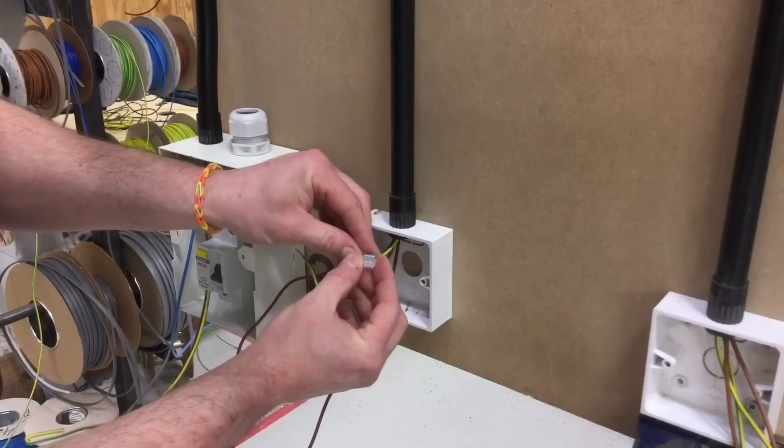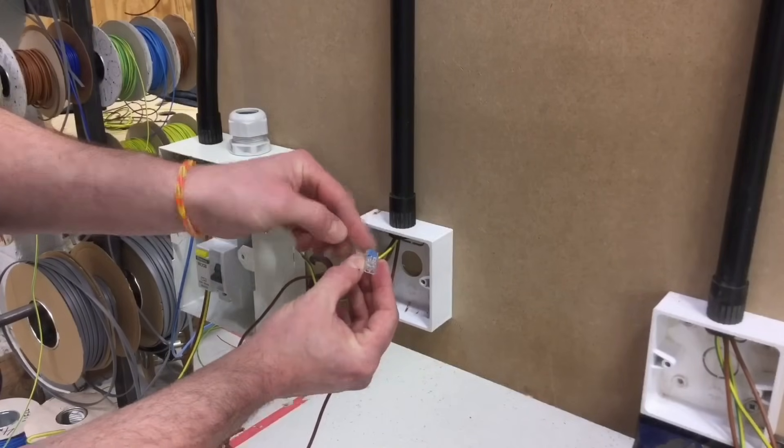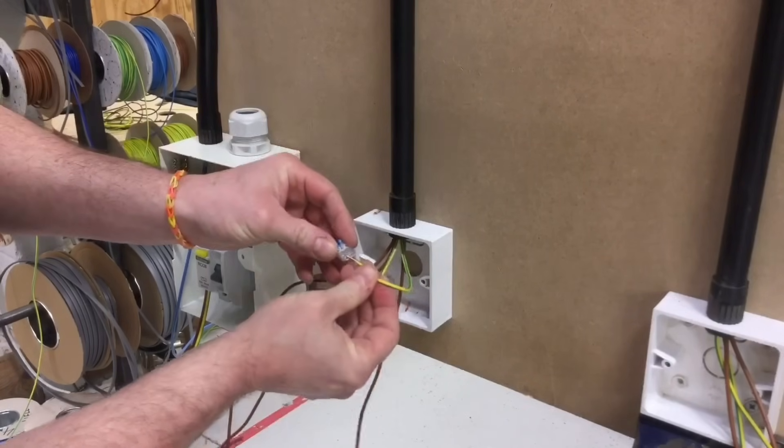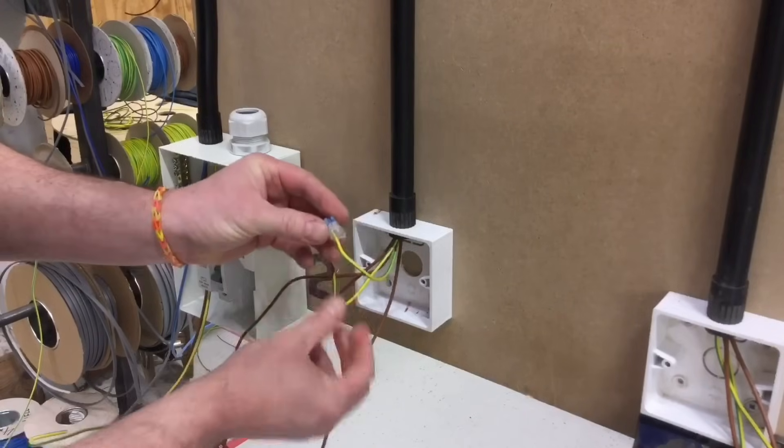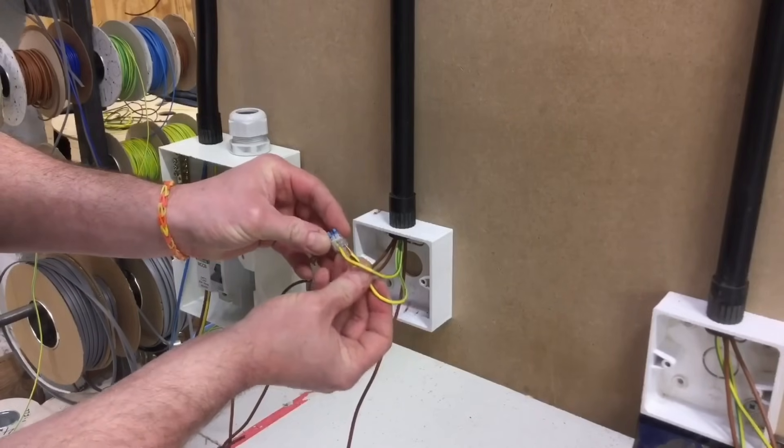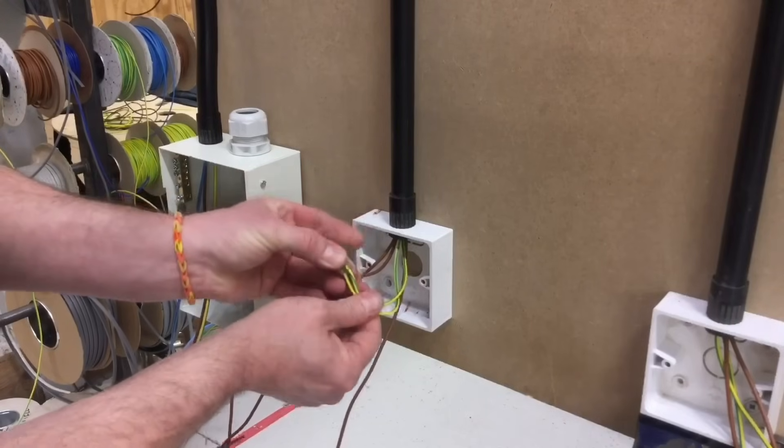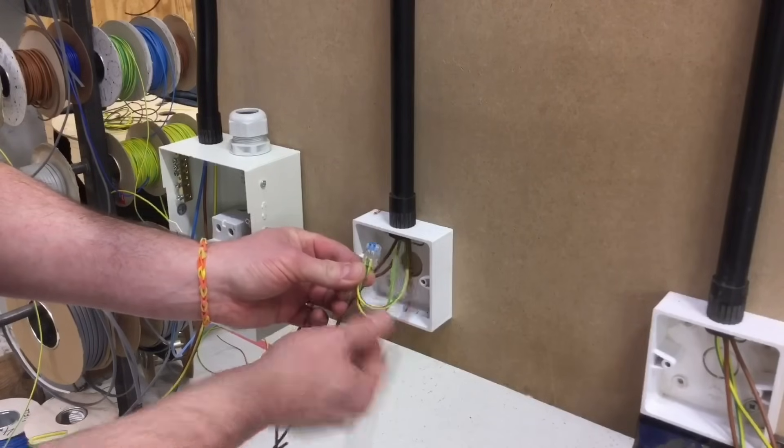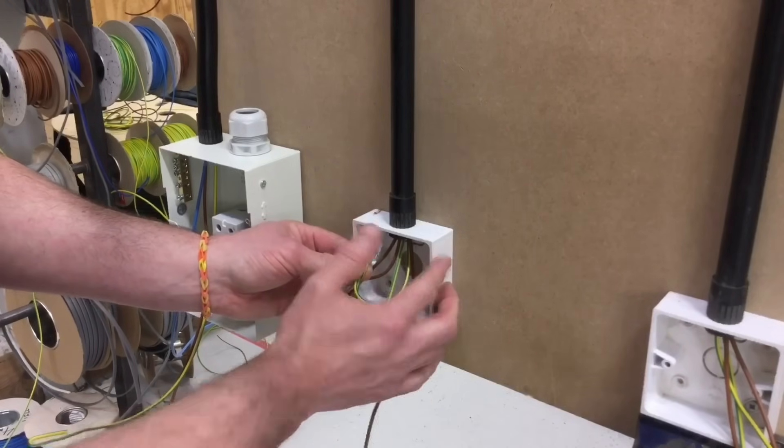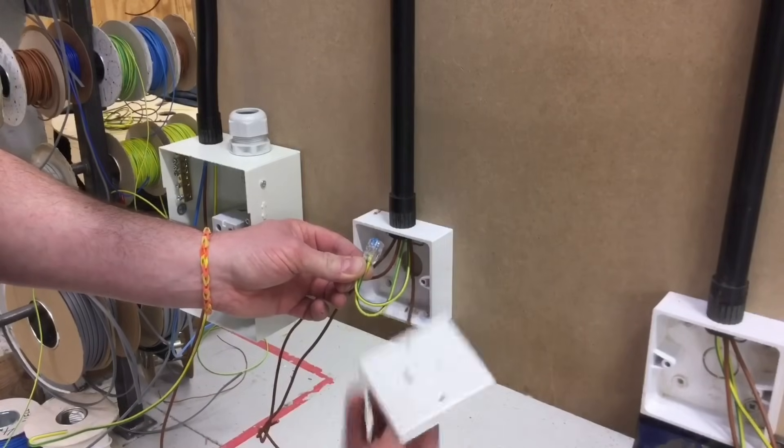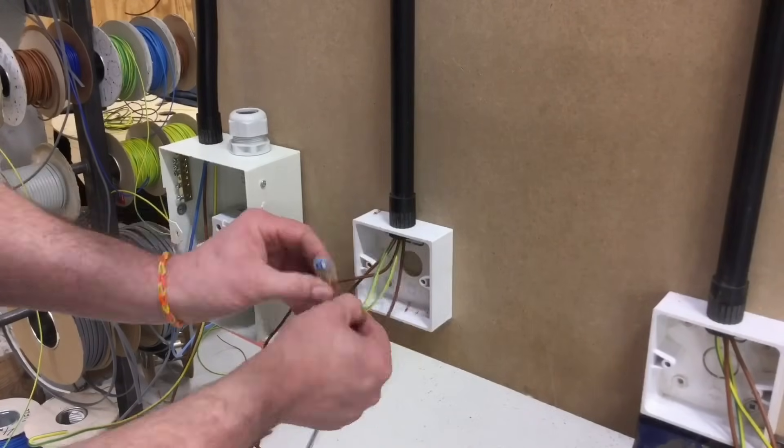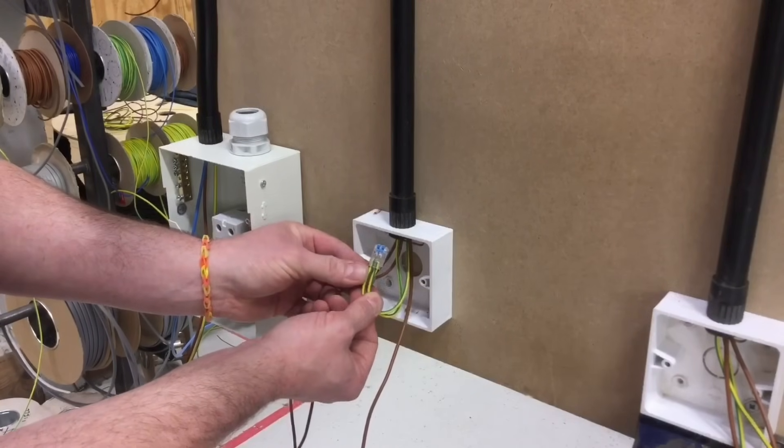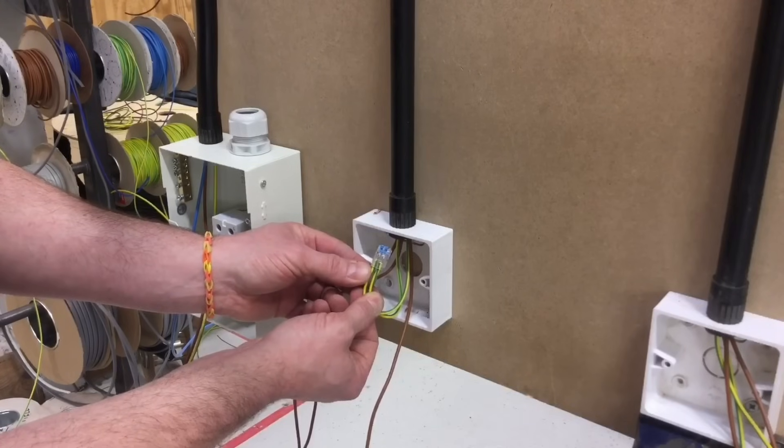We're going to connect these into an Inshore style maintenance-free connector, the ones with the lever arms at the top. Take the second CPC, again remove considerably more insulation than we need, twist again, keep going. We're nice and super tight. Trim it back to about 11 millimeters and turn the end back again. Take my maintenance-free Inshore Wago connector, pull both arms up and position our conductors in. Push them into the connector, arm down, just give it a tug.